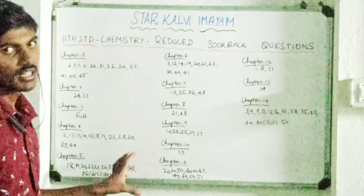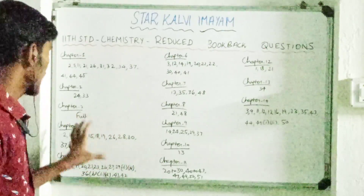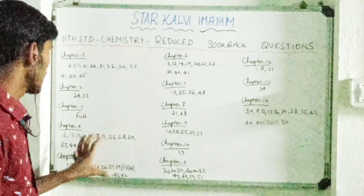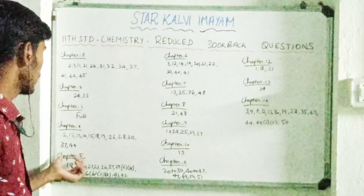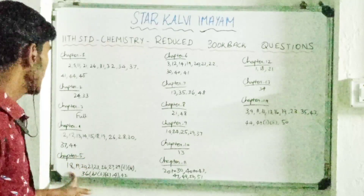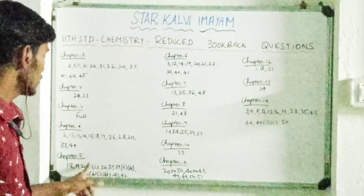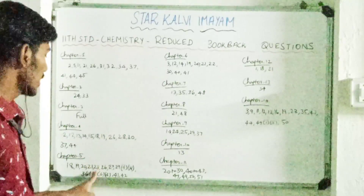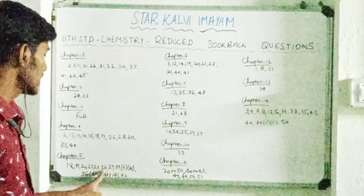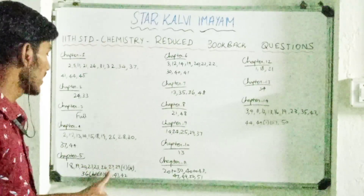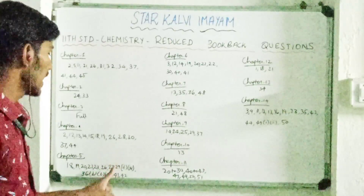Chapter 5 question numbers: 18, 19, 20, 21, 23, 26, 27, 29.